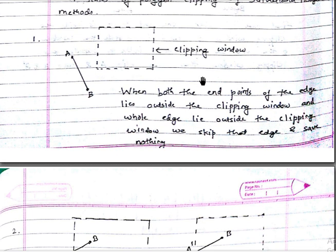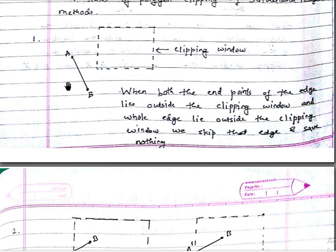Rule one: suppose this is edge AB. When both endpoints of the edge lie outside the clipping window and the whole edge also lies outside the clipping window, we skip that edge and save nothing. We are clipping the whole edge and don't save anything.